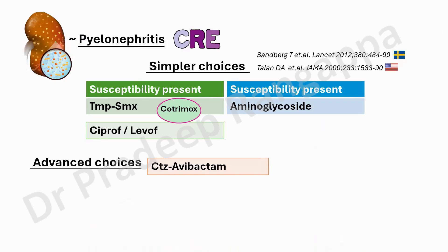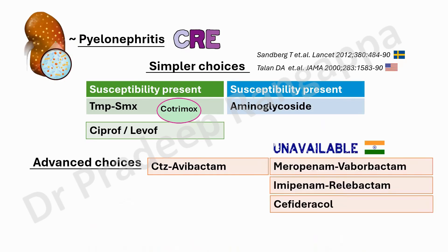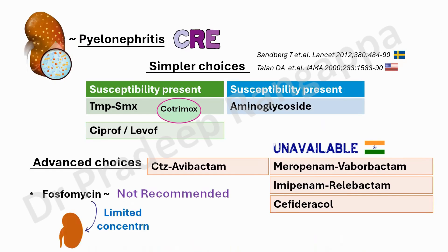For pyelonephritis, unlike uncomplicated cystitis, there is no recommendation for colistin — only ceftazidime-avibactam. The drugs unavailable in India — meropenem-vaborbactam, imipenem-relebactam, and cefiderocol — are also recommended. Fosfomycin, which was suggested for E. coli in uncomplicated cystitis, is not recommended for CRE affecting the kidneys with pyelonephritis because it has limited ability to attain adequate concentrations in the renal parenchyma.